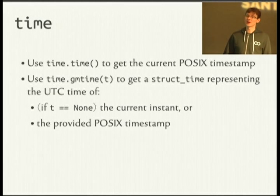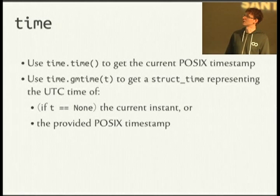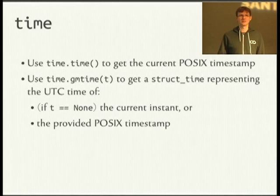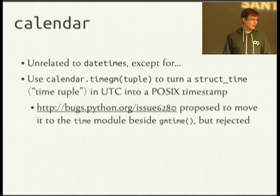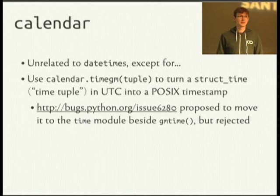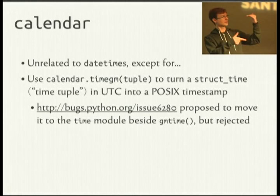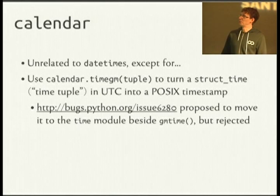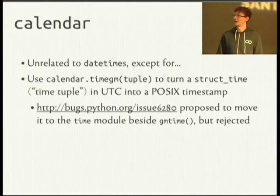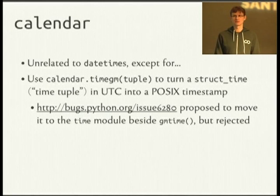Methods you can use: there's the time() method, which gives you a POSIX timestamp. Python will try to return floating point numbers if it possibly can on the platform. You can use gmtime() to get a struct_time representing the UTC timestamp, either the current instance or a timestamp you provide. The calendar module has nothing to do with datetimes directly, but it has one method, timegm(), that accepts a time tuple and returns a POSIX timestamp. There's actually a bug open for that to move it, but it was deferred because of the work involved.